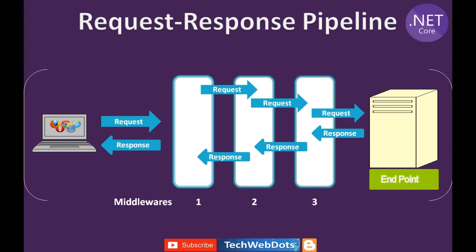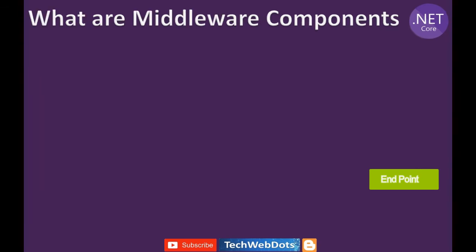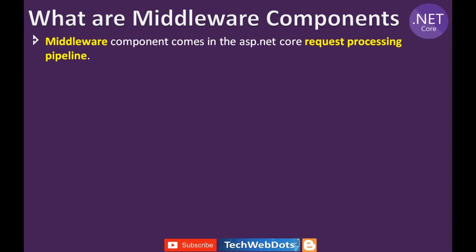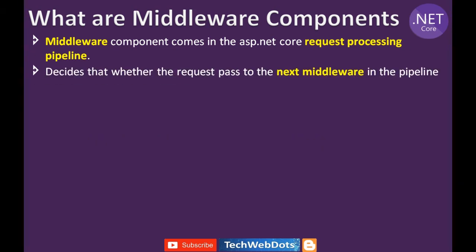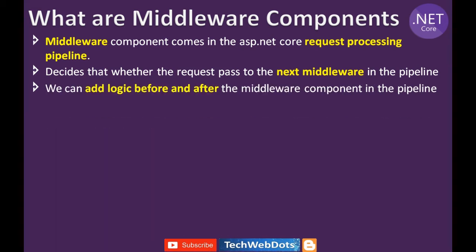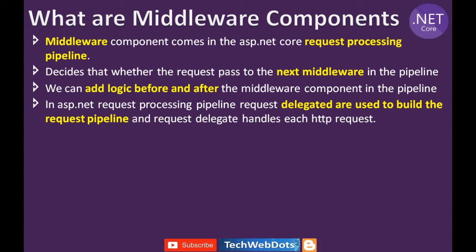Middleware plays a very important role — we can add pre-processing logic or post-processing logic at every middleware. The middleware component comes in the ASP.NET Core request processing pipeline and it decides whether the request is passed to the next middleware based on certain conditions. We can add logic before and after the middleware component. Request delegates are used to build the request pipeline, and each request delegate handles each HTTP request.